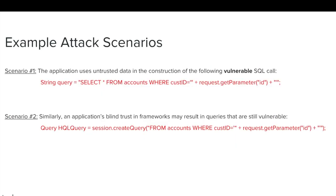Let's review a couple of attack scenario examples. In the first scenario, the application uses untrusted data in the construction of a vulnerable SQL call. Similarly, in the second scenario, an application's blind trust in frameworks could result in the execution of unsafe queries. Pause the training video here to review these examples, if needed.